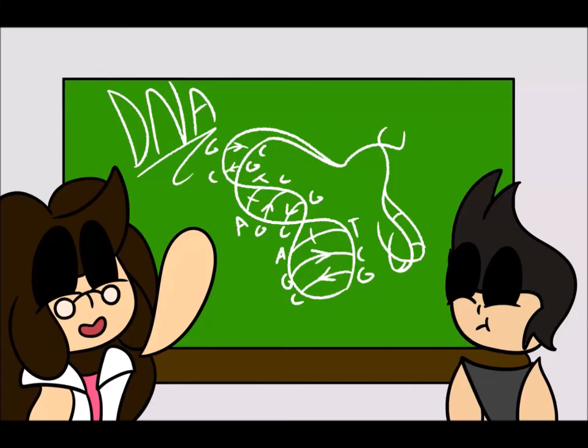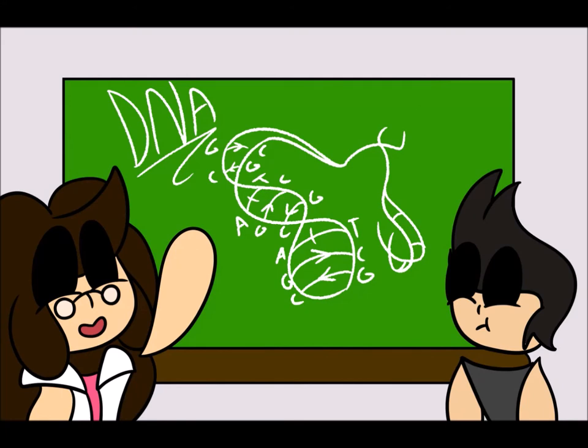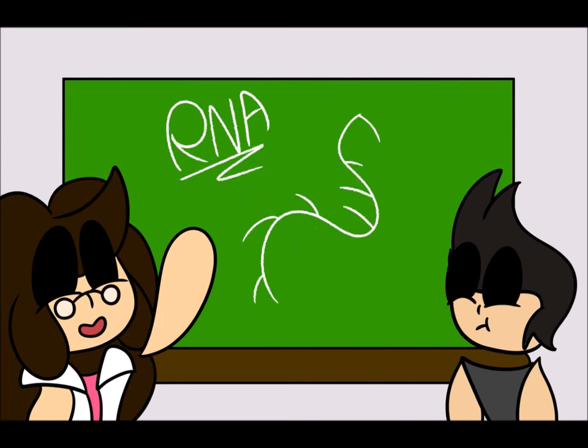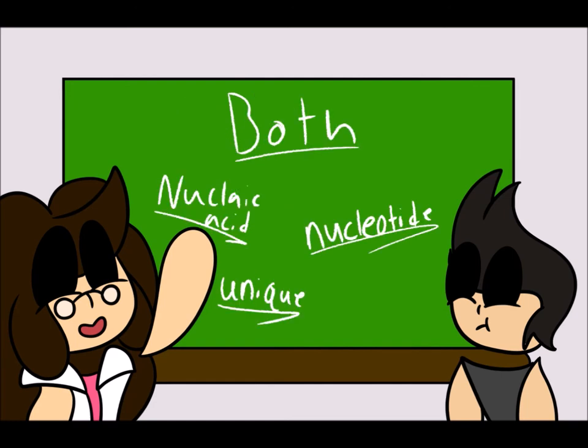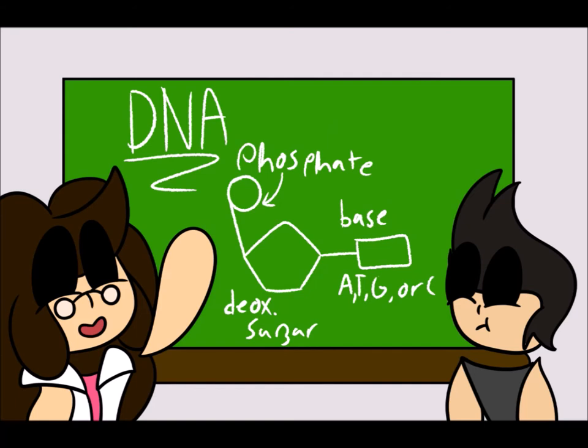DNA carries the genetic information within each living organism, and RNA acts as a messenger for carrying the instructions from DNA. They are both nucleic acids and they are both made up of nucleotides. DNA nucleotides have three parts: five-carbon sugars, phosphate groups, and a nitrogenous base. In DNA, the bases are adenine, guanine, cytosine, and thymine.